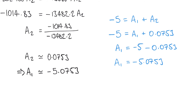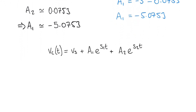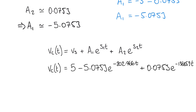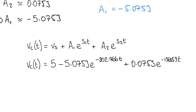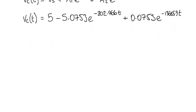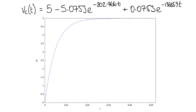Our equation is now complete. We've found S1, S2, A1, and A2. Substituting all values back into our original expression gives the full solution. Visualizing this result, the over-damped response looks similar to the critically damped graph from a previous video. Having seen all three examples, it's helpful to compare them side by side.